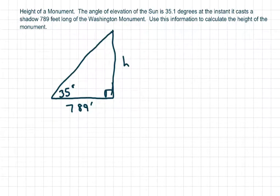Hi everyone. We're going to find the height of a monument. They give you the angle of elevation to the sun. So here's your sun, the green sun.